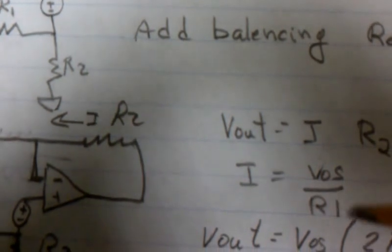And since these two are the same, the only where the difference can appear is across R1. And that's where we get I equals Vos divided by R1.